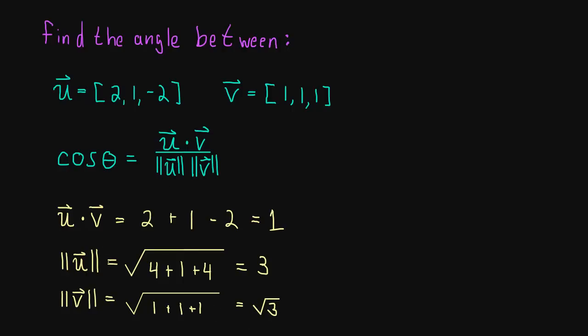We have our necessary pieces here, so let's put them all together. We have the cosine of the angle between the two vectors is equal to the dot product of the two vectors, which we found was equal to 1, divided by the length of u, that's 3 times the length of v, that's the square root of 3.